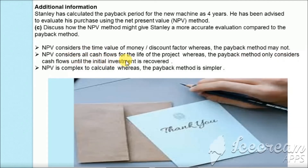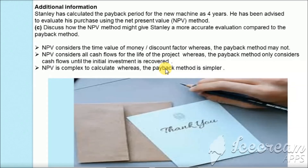Additionally, NPV considers all cash flows over the entire life of the project. For example, if the project runs for eight years, NPV considers all cash flows for those eight years. In contrast, the payback method only considers cash flows until the initial investment is recovered — in this case, four years — which may not give an accurate picture. However, NPV is more complex to calculate than payback. Nevertheless, it provides a better evaluation as it accounts for the time value of money and all project cash flows, making it the preferred method for investment appraisal.